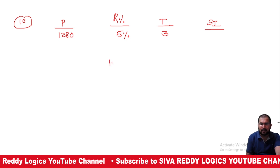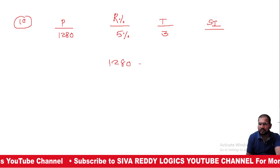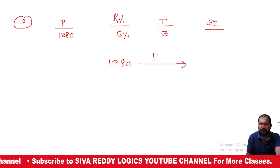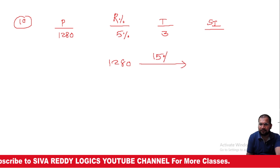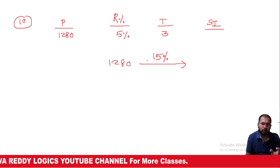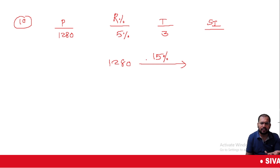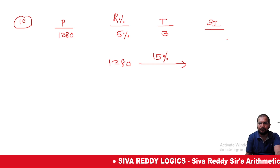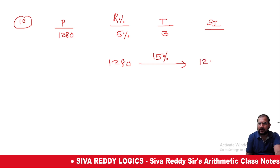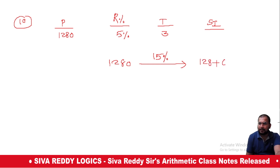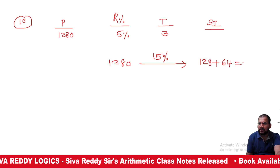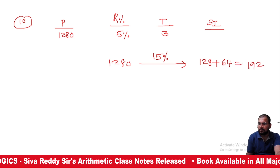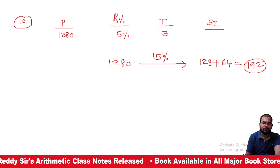Find the simple interest at 5% for 3 years, which is 15%. 10% is 128, so 5% is 64. 128 plus 64 equals 192. So the simple interest is 192.